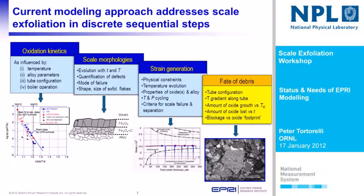The current modeling approach involves a number of steps and scale modules addressing exfoliation sequentially. We start with oxidation kinetics as influenced by temperature, alloy parameters, tube configuration, and boiler operation. We move on to scale morphologies — which are obviously linked — looking at evolution with time and temperature, using a lot of the empirical knowledge that people like Barry and others are quantifying. We try to quantify defects, identify the mode of failure for different alloys and conditions, and track shapes and size of exfoliated flakes. Much easier said than done — we have to make some big assumptions there.